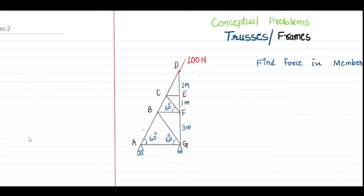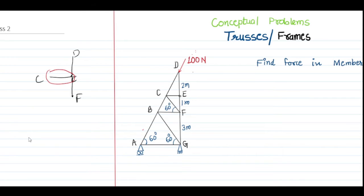The condition for a zero force member is that whenever we have two collinear members with a side branch. For example, if I look at joint E in this given truss, at joint E I have one member E to D, another member E to F, and a third member E to C. So EC is the side branch here. Whenever we have a side branch, it will carry zero force — the force will not be transmitted through the side branch.